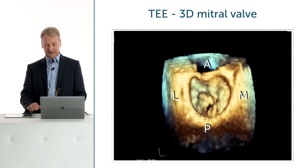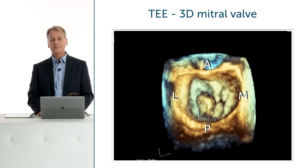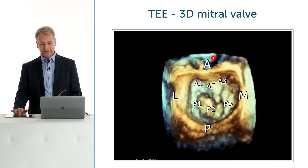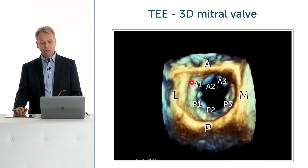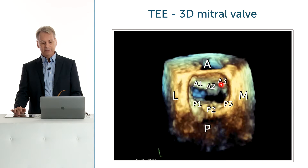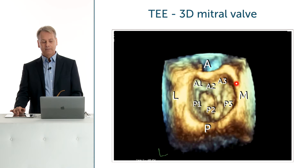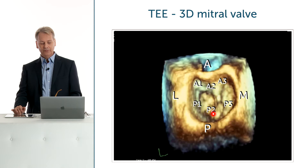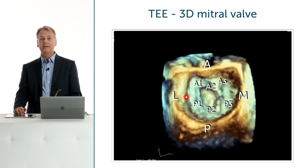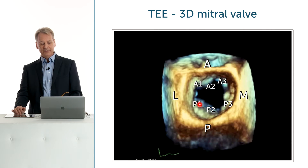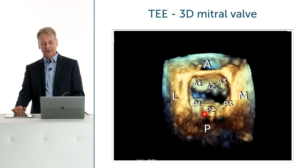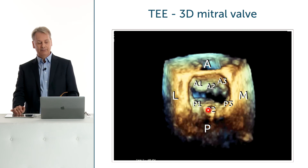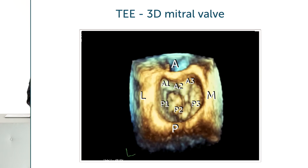In this case we have a pathology here, but how can we exactly delineate where it is? We use the Carpentier classification. Knowing that this is anterior and this is lateral, then A1 must be here, A2 here, and this is A3. This would be the posteromedial commissure, then P3 — the posterior leaflet — P2, P1, and then the anterolateral commissure right here. Using this classification, we can determine where the pathology is: a prolapse or even a partial flail leaflet located somewhere between P1 and P2 — an easy way of communicating the problem to the surgeons.